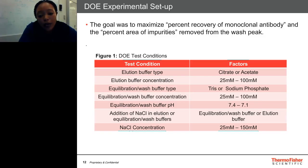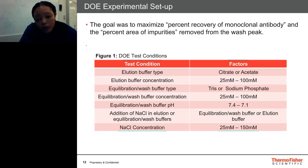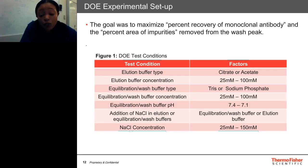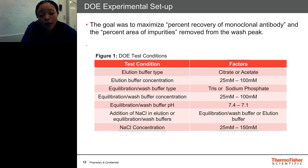The elution buffer types we looked at were citrate or acetate. Elution buffer concentrations ranged from 25 mM to 100 mM. The equilibration and wash buffer type was either Tris or sodium phosphate. The equilibration and wash buffer pH was between 7.1 and 7.4 — notably not straying far from physiological conditions. We also looked at the addition of sodium chloride not just in the equilibration and wash buffer but in the elution buffer as well, at concentrations ranging from 25 mM to about 150 mM.